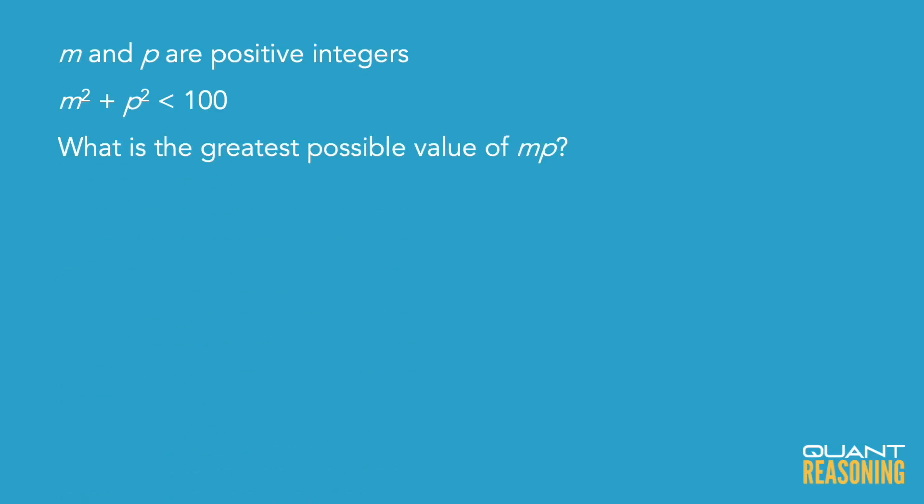Let me try to simplify this question a bit. If it wasn't giving us the sum of their squares — if it was just giving us the sum — in general, if you know the sum of two numbers and you want to maximize their product, you'd want those numbers to be as close as possible to each other. For example, if the sum of two numbers is 10: if those numbers are 0 and 10, their product is 0. If the numbers are 2 and 8, their product is 16. If the numbers are 5 and 5, the product is 25. So to maximize the product of two numbers with a given sum, you'd want those two numbers to be equal. The closer the numbers are to each other, the greater their product.